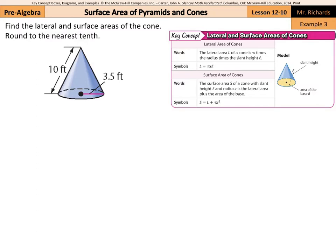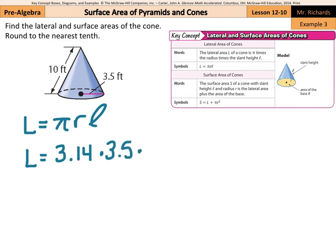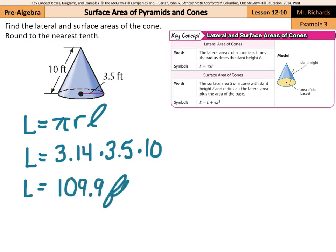Find the lateral area and surface area of the cone — round to the nearest tenth. For lateral area first: lateral area equals π times the radius times the slant height. So lateral area equals 3.14 times a radius of 3.5 times a slant height of 10. When I multiply these three numbers together, the product is 109.9 feet squared. That's the lateral area.